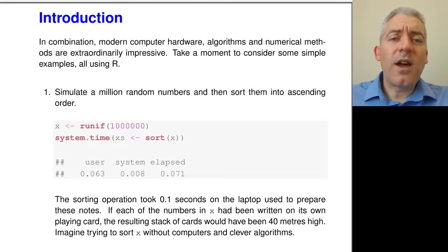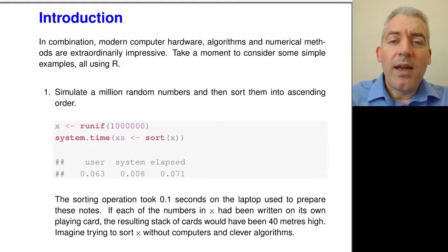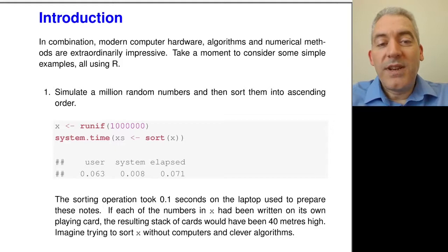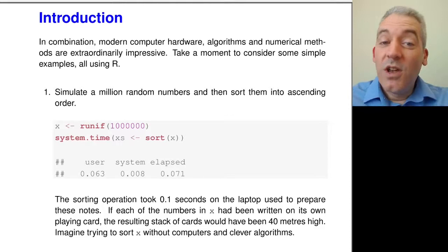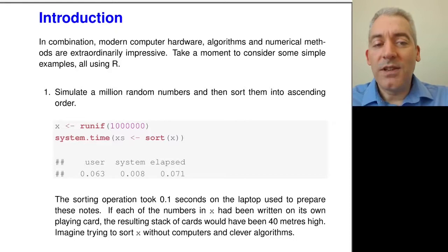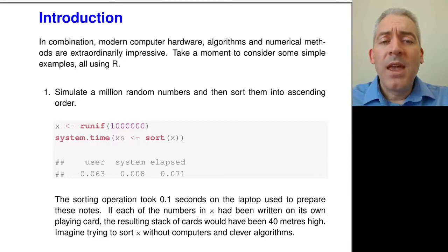We start with a couple of examples that really illustrate how amazing computers are and how computing, particularly modern computing technology, allows us to solve lots of problems that would be kind of inconceivable without using computers. The first example here is just sorting a million numbers. We can simulate a million random numbers and sort them into ascending order in the blink of an eye. Here I've used the system time function in R to time how long this operation takes.